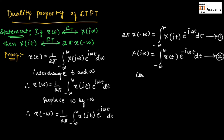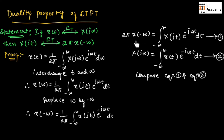Now let us compare equation 1 and equation number 2. Fourier transform of X(t) gives X(jω). In the same way, we can say if we take Fourier transform of X(jt) we will obtain 2π X(-ω). Therefore, by comparing these two we can say X(jt), if we take Fourier transform, we will obtain 2π X(-ω). So this is the proof.